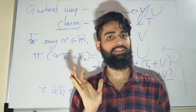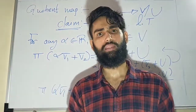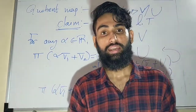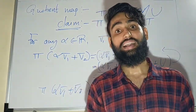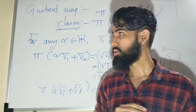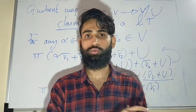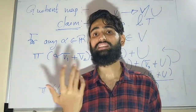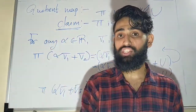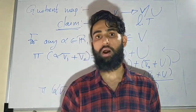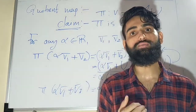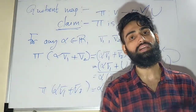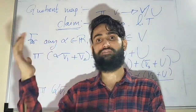The quotient map is really important because it will help us find out the dimension of V modulo U in the simplest possible way. It is a linear transformation, and once you learn linear transformation, the important theorem that comes to mind is the rank-nullity theorem. So after watching this video, I request all students to write down what the rank-nullity theorem states, the definition of rank, and the definition of nullity. That is what we are going to use in the next video.